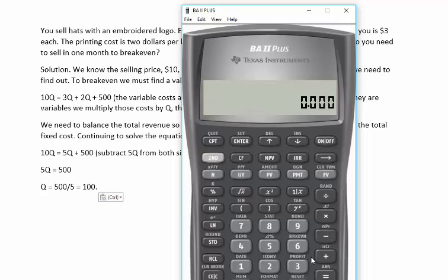And the thing that we want is break even. There's a worksheet here called break even. It's second break even. It's asking us for the fixed costs. So we know that's 500. Enter. Scroll down.